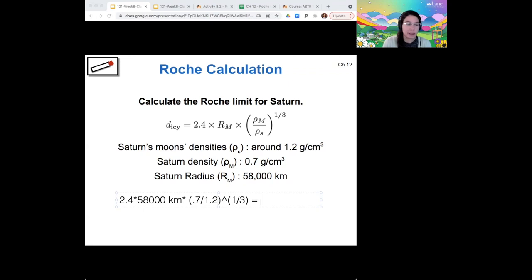So when I type this into my calculator, I also got something around, I'm going to round it to 116,000 kilometers. And we're in units of kilometers here because Saturn's radius was also given to us in kilometers. And that's the only unit that did not get canceled in this equation. So that is how I applied this to this equation.